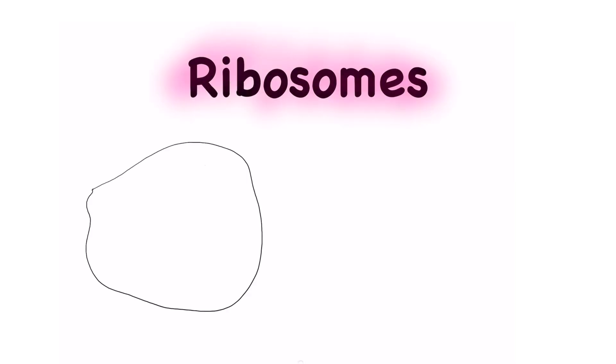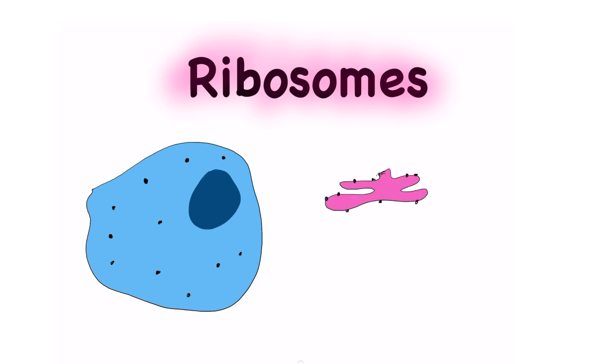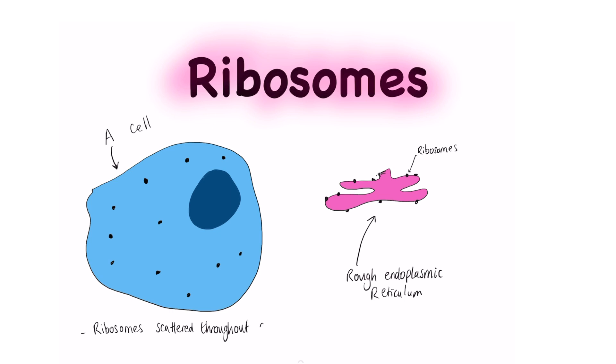Ribosomes are small granules which you can find in all cells. You may find them scattered around the cytoplasm, or they could be attached onto the rough endoplasmic reticulum.